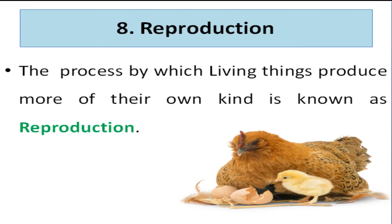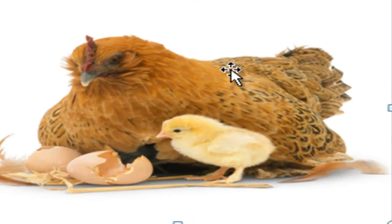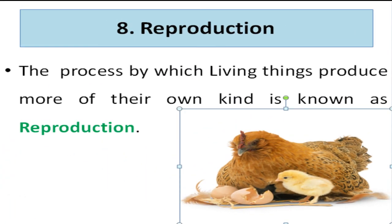Our next keyword is reproduction. The process by which living things produce more of their own kind is known as reproduction. For example, as shown in the figure, a hen gives eggs, from which a chicken grows and then converts into a hen. So the process by which any living organism produces offspring of their own kind is called reproduction.